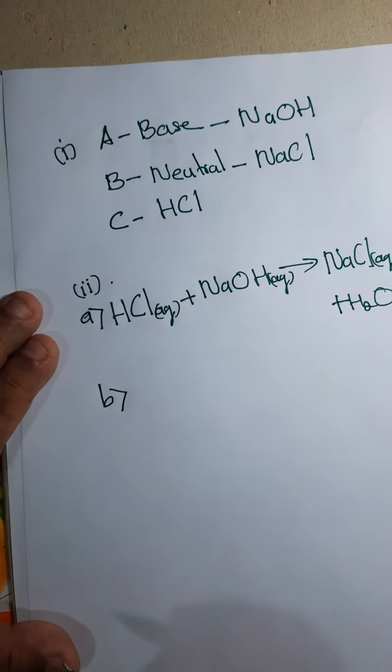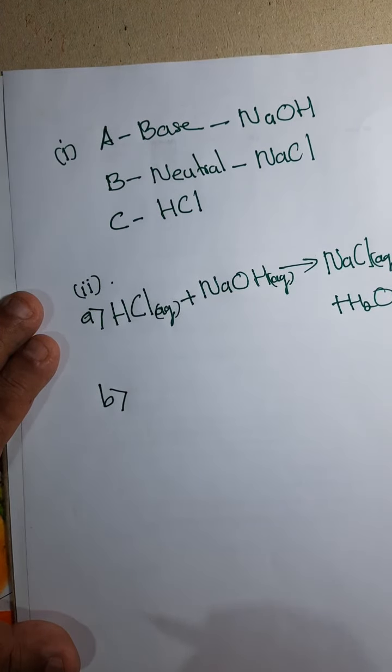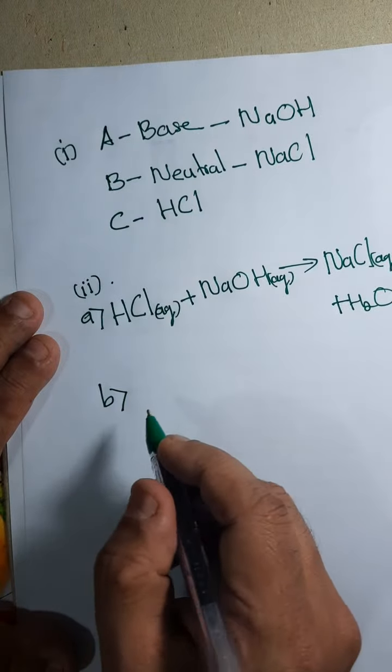Now the B question: calculate the heat change associated with the reaction mentioned above. Specific heat capacity of water is given, density of water is given here.